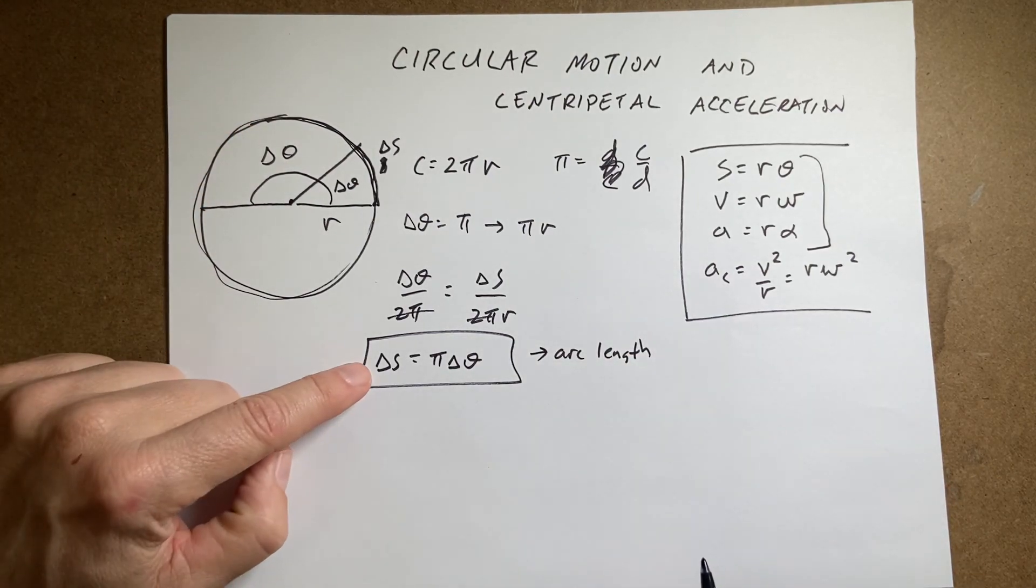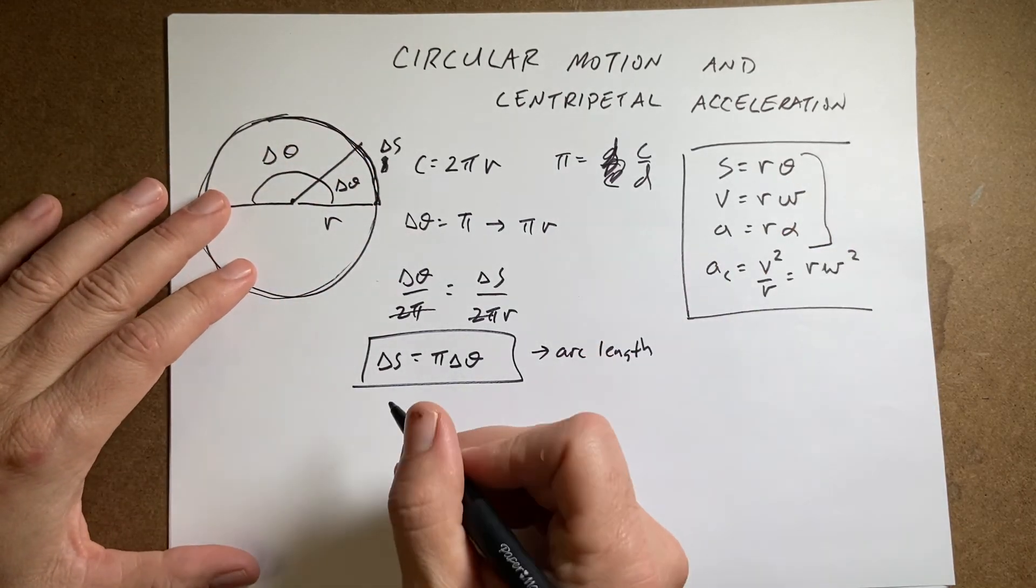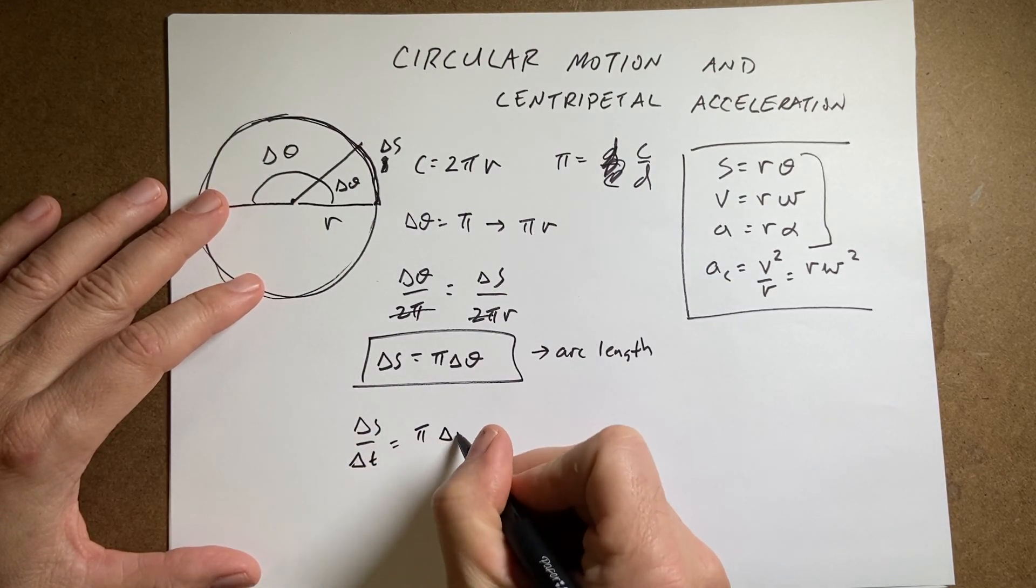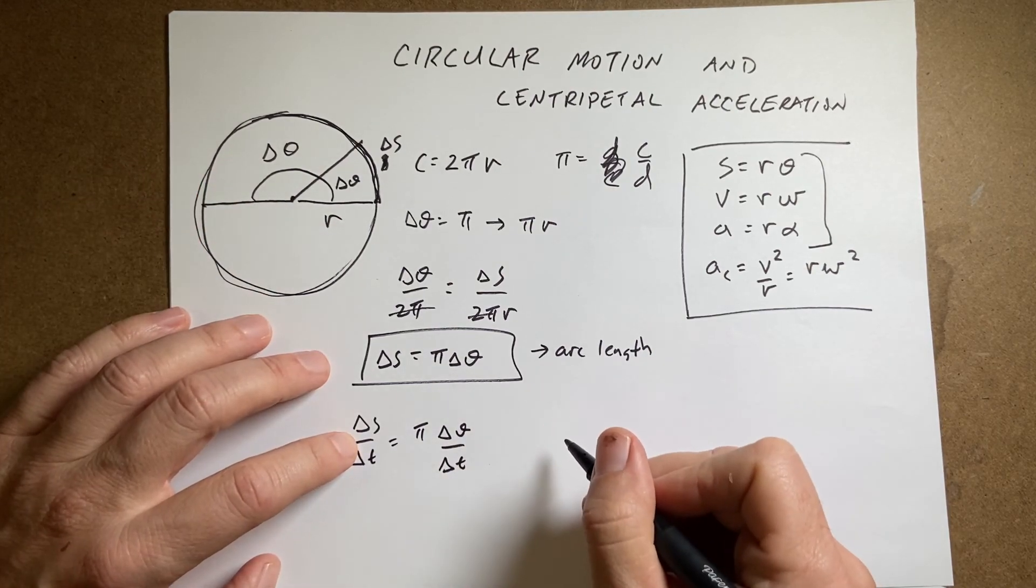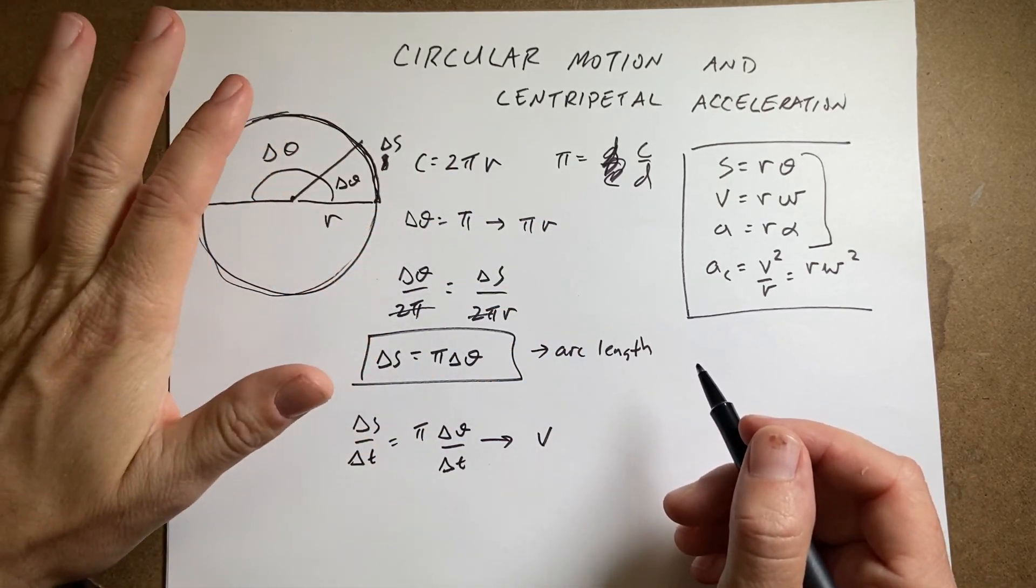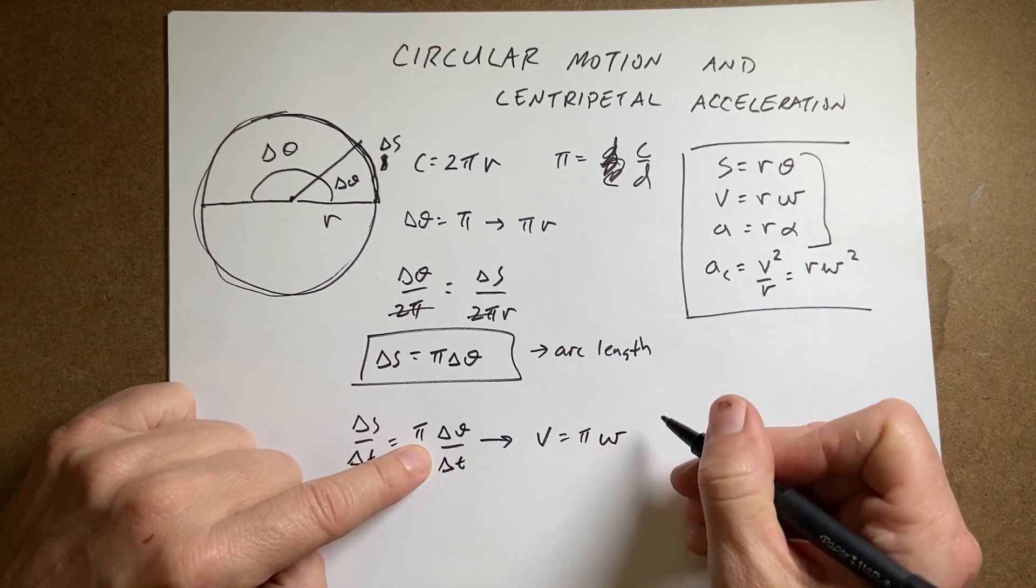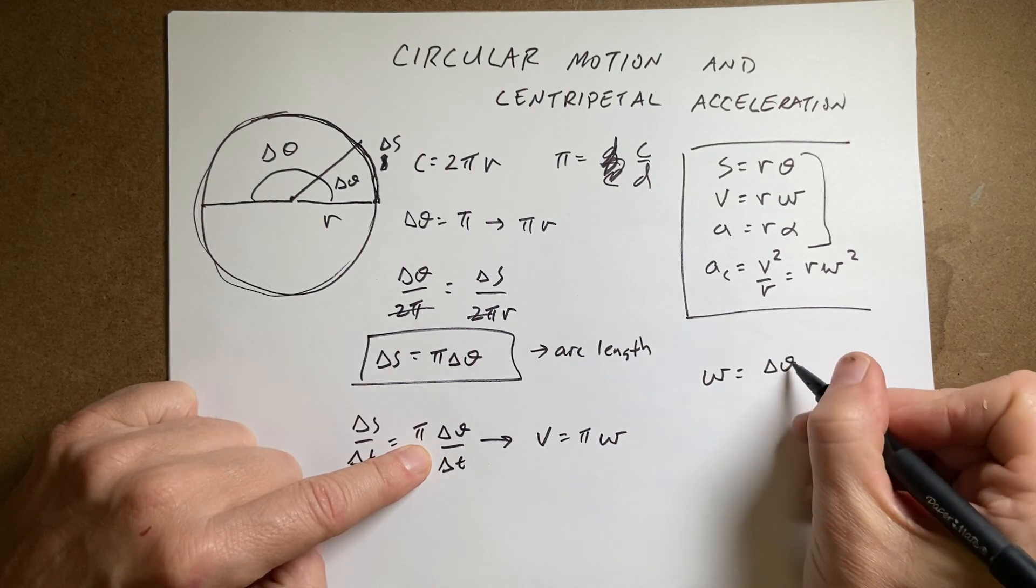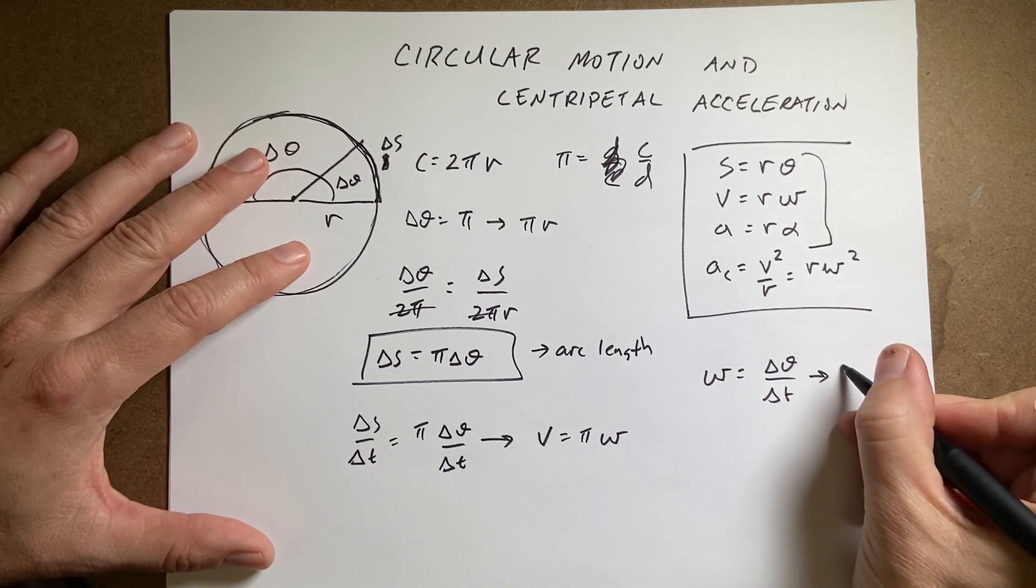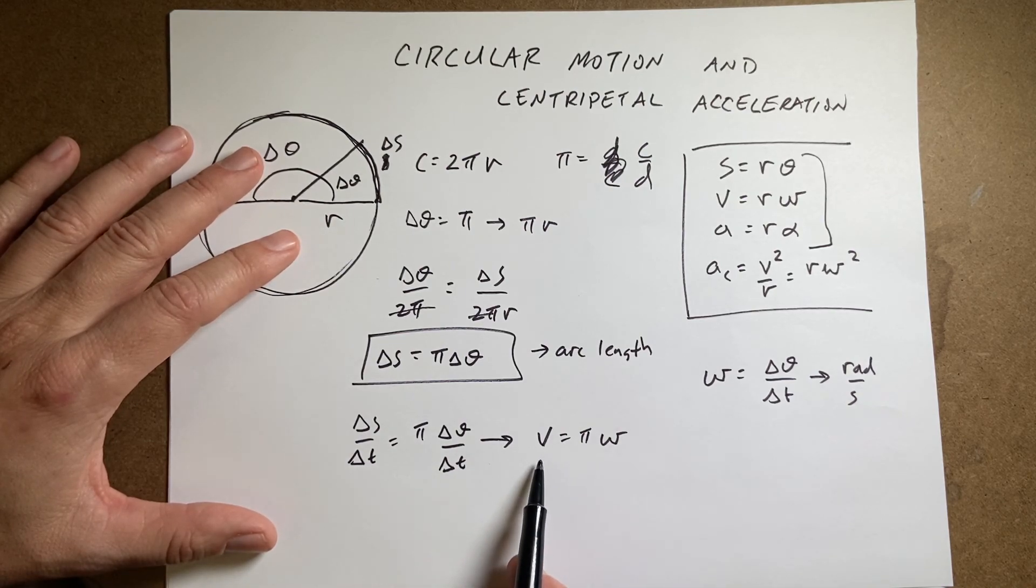Now what if I let some object move along that path, and it takes some time interval delta t? Well, then I can say delta s over delta t equals r times delta theta over delta t. I can call delta s over delta t the velocity - not the vector velocity, we'll get into that in a bit - the magnitude of the velocity. And then this is going to be equal to r times omega, where we define omega as the angular velocity, the change in theta with respect to time. Now, this works if omega is in radians per second. If omega is not in radians per second, then this does not work.